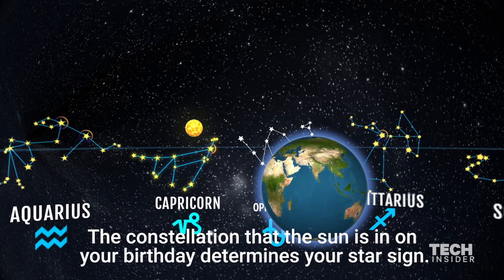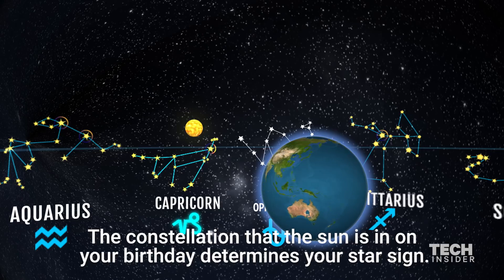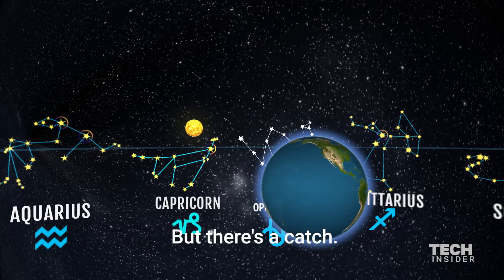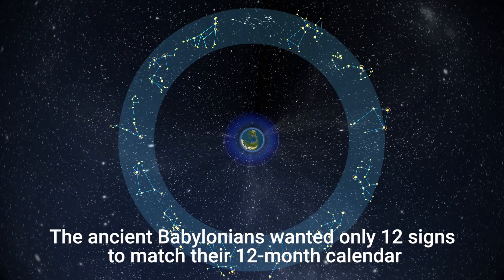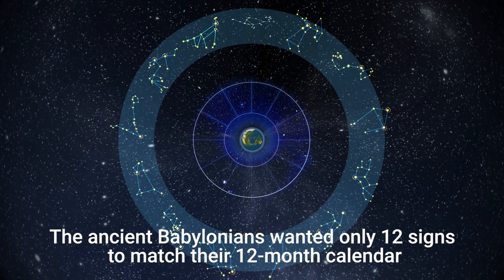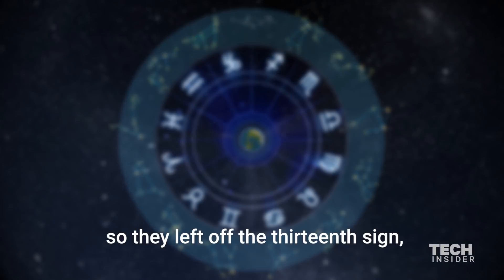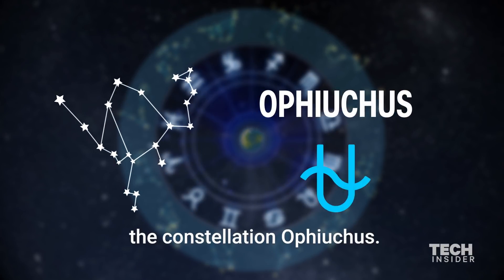The constellation that the Sun is in on your birthday determines your star sign, but there's a catch. The ancient Babylonians wanted only 12 signs to match their 12-month calendar, so they left off the 13th sign, the constellation Ophiuchus.